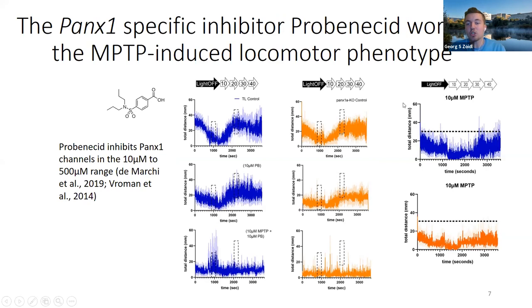When we treat the zebrafish with MPTP, locomotion decreases quite significantly in both dark and light conditions for both the wild type and the PANNEXIN-1A knockouts. When treated with just probenecid, you can see that the wild type starts to resemble the PANNEXIN-1A knockouts. And in a combined treatment of MPTP and probenecid, probenecid seems to worsen the MPTP-induced locomotor phenotype even further.